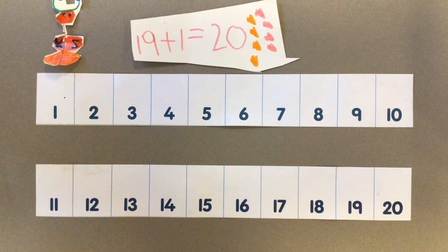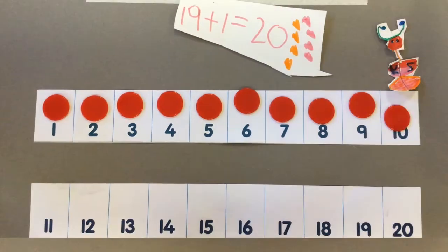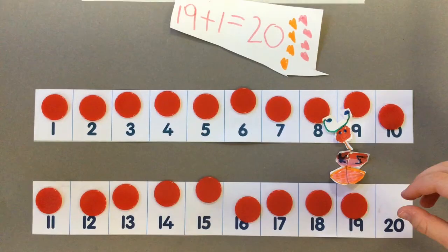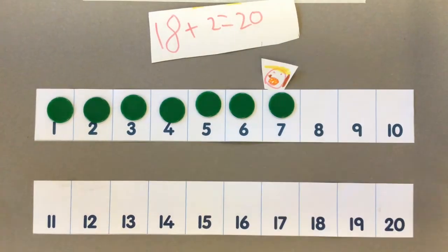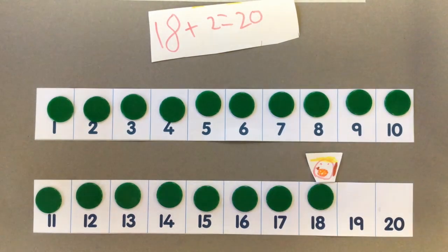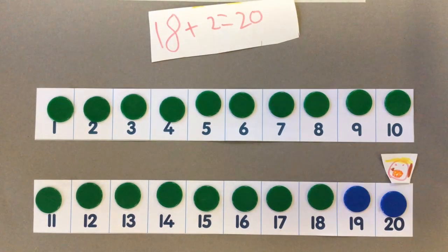Number bonds on the number line. Add 1, it equals 20. 80 add 2, it equals 20.